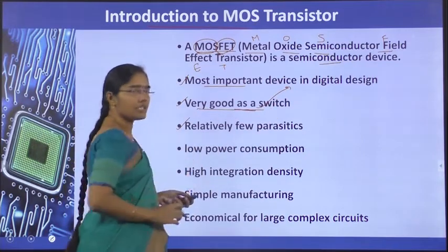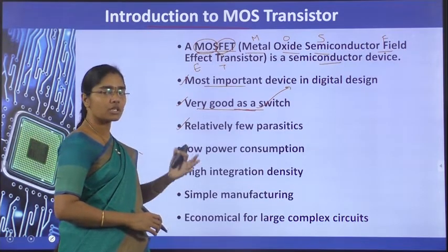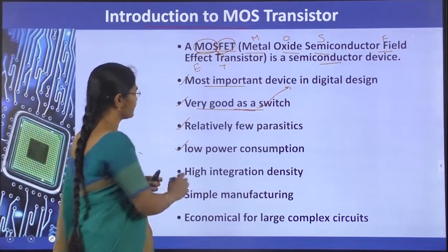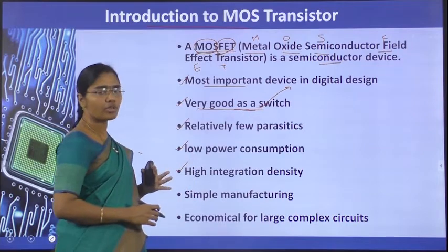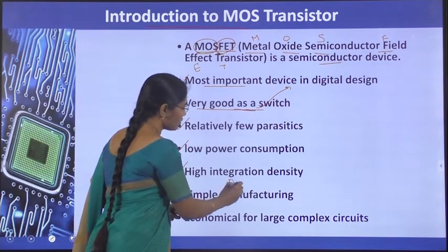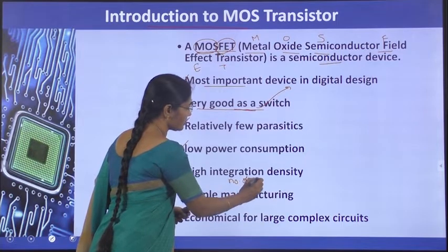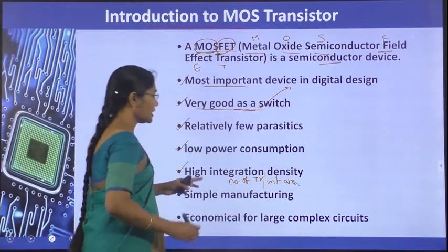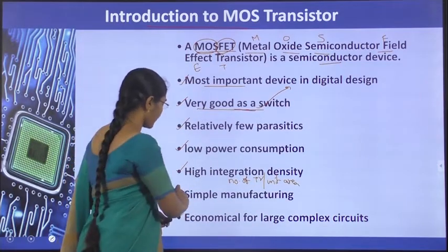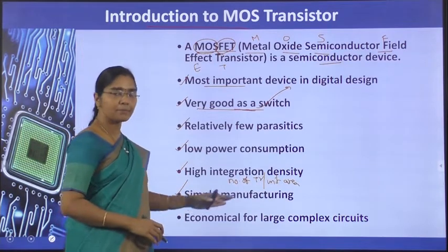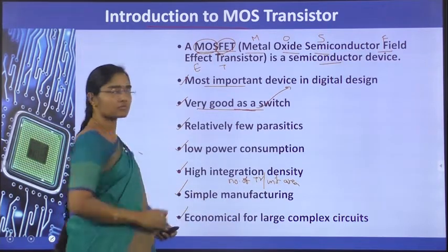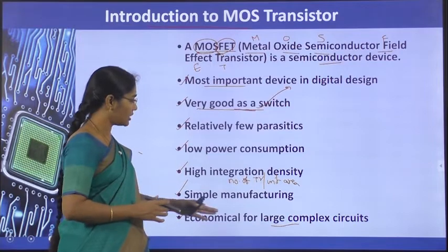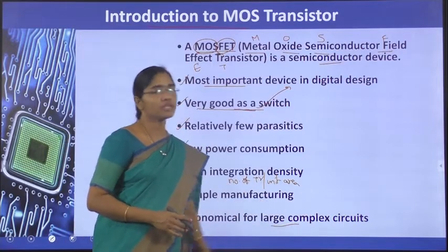MOSFET has relatively few parasitics, so delay is less and power consumption is also less. It has high integration density — that is, the number of transistors per unit area is more. Its manufacturing is simple and economical, and because of mass production it is cheaper for large complex circuits.